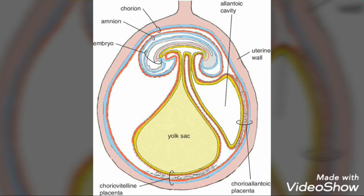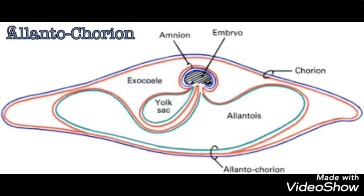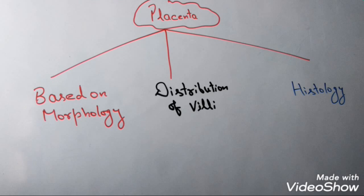Both the yolk sac and chorion layers participate in the formation of placenta along with maternal uterine tissue. In the allantoic chorion type of placenta, it is the allantois — not the yolk sac — that gets enlarged and fuses with the chorion layer, and both layers participate in the formation of placenta along with maternal uterine tissue. The common example of allantoic chorion type of placenta is the human being.